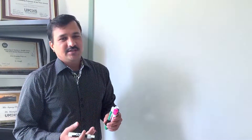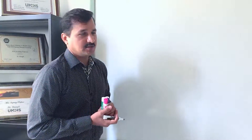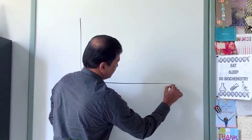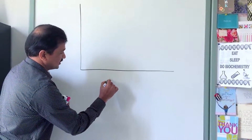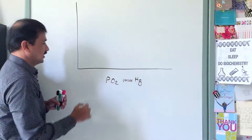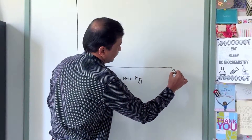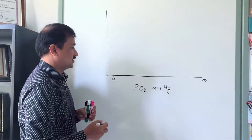Today I'll explain the oxygen dissociation curve for both hemoglobin and myoglobin. I'm drawing a figure with x-axis representing the partial pressure of oxygen, PO2, in millimeters of mercury, ranging from 10 to 100 millimeters of Hg.